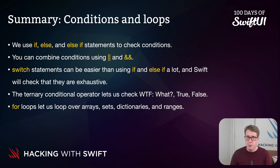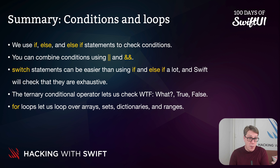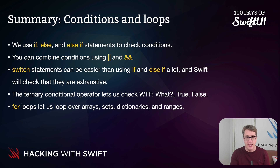We have for loops, which are great for looping over finite sets of data — it could be an array, a dictionary, a set, a range, or something else. You can assign items from your array or whatever you're looping over to a loop variable to use inside the loop body. But if you don't want it, you can use an underscore instead to mean ignore the loop variable.